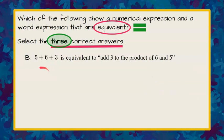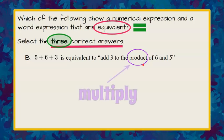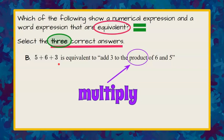Now let's look at choice B. B states the numerical expression five plus six plus three is equivalent to 'add three to the product of six and five.' Since product means to multiply, and this numerical expression has no multiplication signs, we can rule out choice B. With repeated addition, order doesn't matter — addition is commutative — but we would not be finding the product of six and five because there are no multiplication signs.